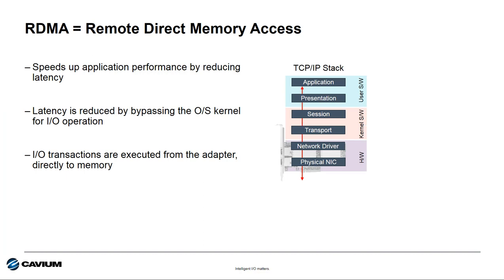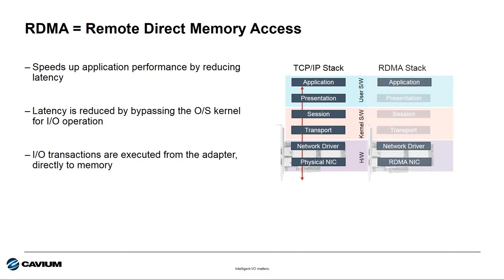If we look at networking I/O, we can speed up the performance of the network by reducing the latency. One way to do this is by implementing remote direct memory access, or RDMA, using RDMA-enabled I/O adapters. RDMA speeds up applications by bypassing the software kernel in the host OS and allowing I/O transactions to be executed directly between the adapter and the application memory.